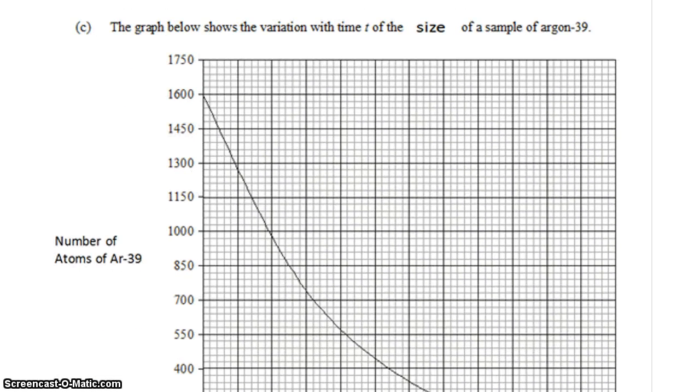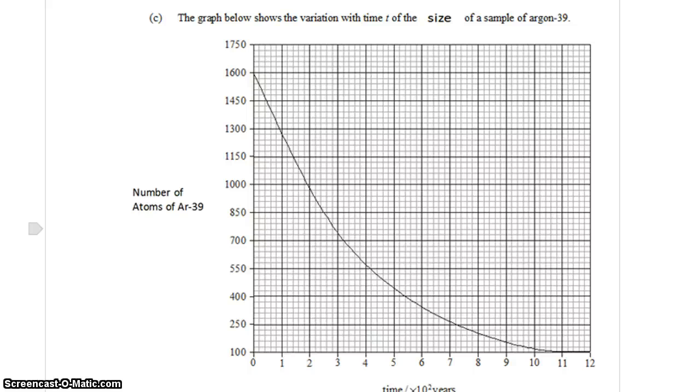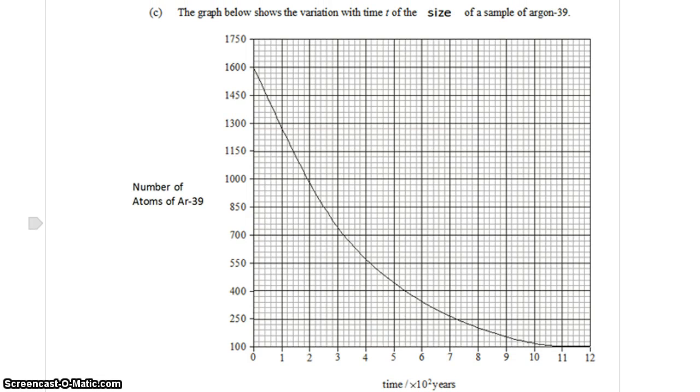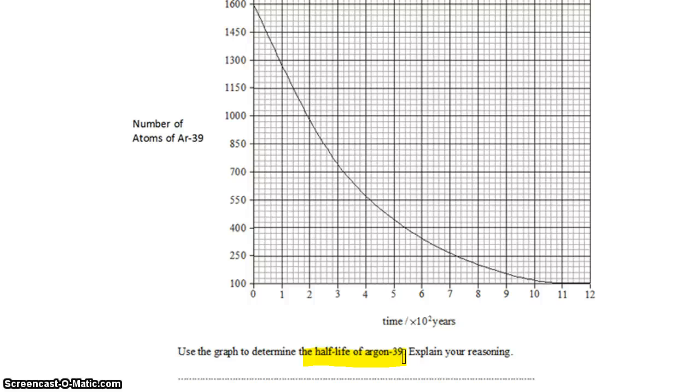We have a graph that shows the variation with time of the size of a sample of argon-39. We see that the size of the sample is reducing. The number of atoms of argon-39 remaining over time is dropping, and we want to use this information to find the half-life of argon-39 and explain our reasoning.